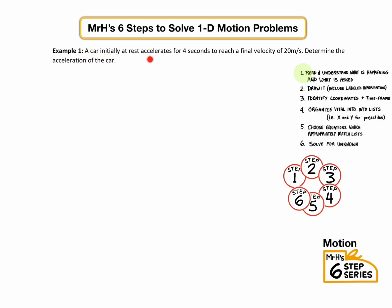A car initially at rest accelerates for four seconds to reach a final velocity of 20 meters per second. Determine the acceleration of the car. We're going to identify the question as asking for acceleration, and we're going to use A for the symbol and then a question mark. That's how we know we're done with step one, when you have a symbol and a question mark.